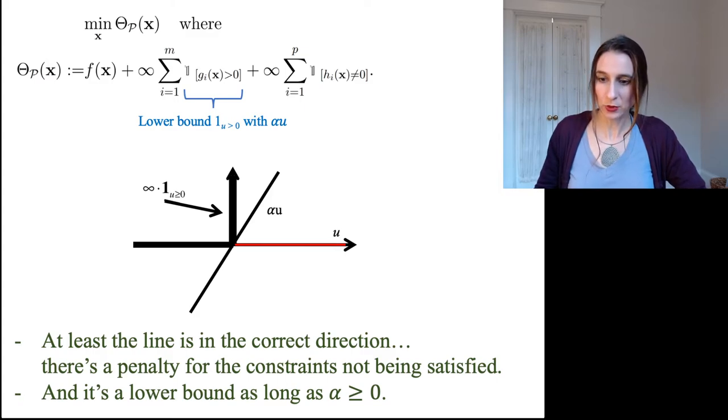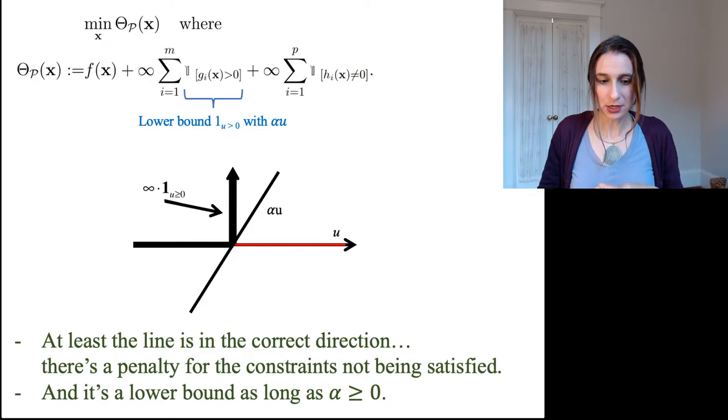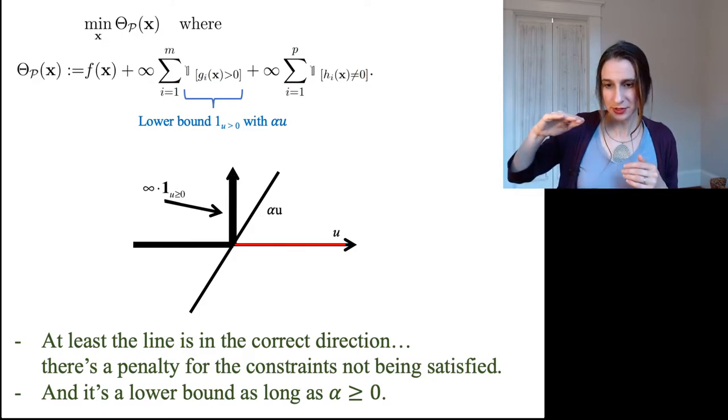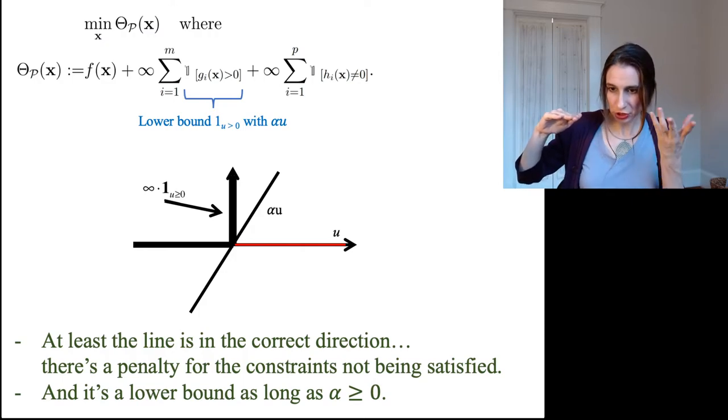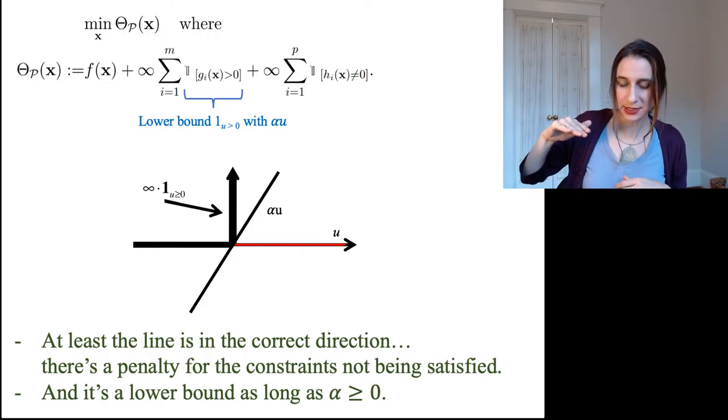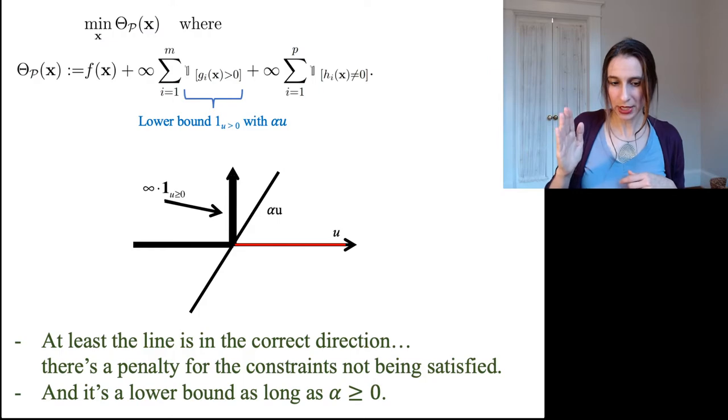The g constraints are satisfied when g is less than or equal to zero, okay? So I have less than or equal to zero over here, so I'm calling it u, so u is actually g of x, right? When it's less than or equal to zero, then the value of that function is zero. And when u is positive, that function is infinite.